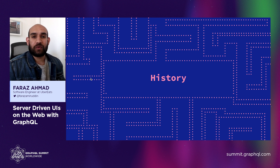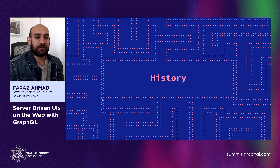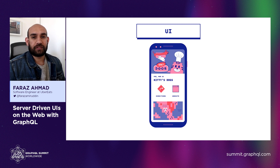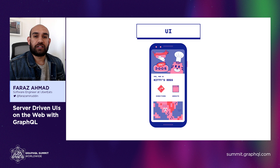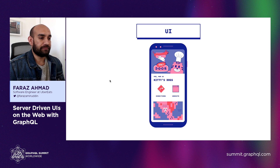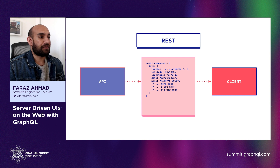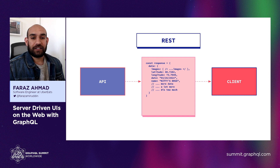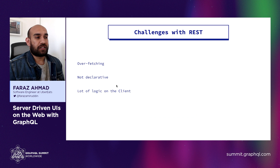Apps have come a long way. They've gotten a lot more personalized, there's a lot more data, and we're constantly experimenting with different things, so this can be challenging. Let's start with an example of a UI that we want to render. In the past, we've gone from REST to GraphQL. If we look back at how we might render this UI with a REST API, you have this REST API and it has a response with some data just about that store — the images, the latitude, longitude, the date, the name, and probably a lot more data because you're just fetching a resource from the backend.